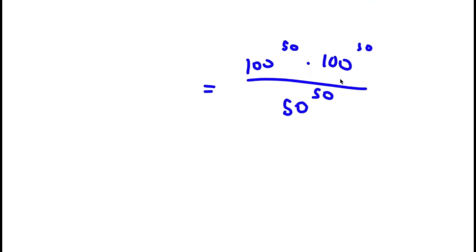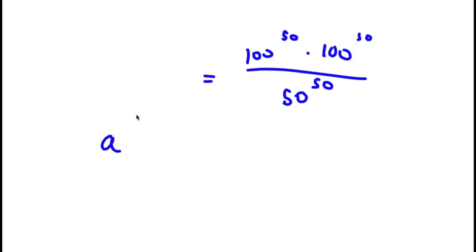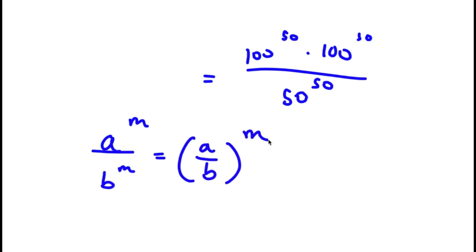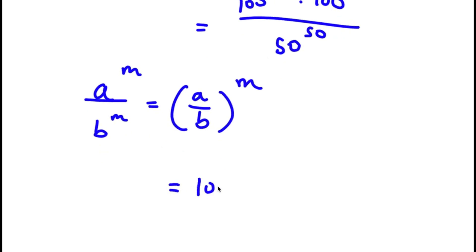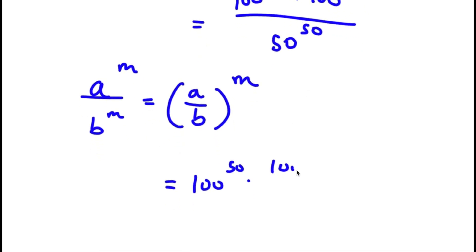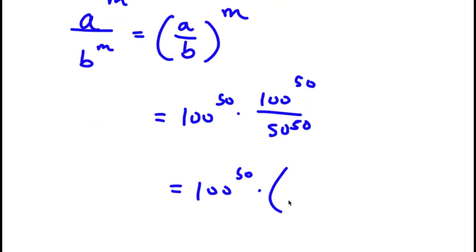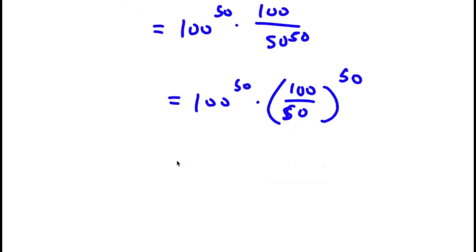Now, using the property that a to the power of m over b to the power of m equals a over b to the power of m, I can rewrite 100 to the power of 50 over 50 to the power of 50 as 100 over 50 to the power of 50. Now, 100 divided by 50 is simply 2. So now I have 100 to the power of 50 times 2 to the power of 50.